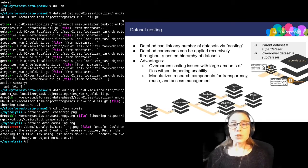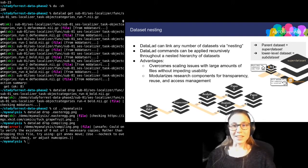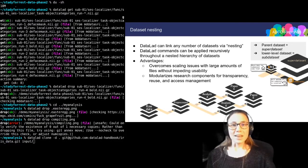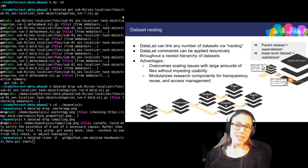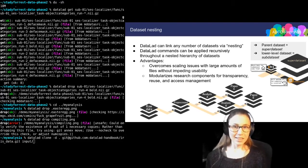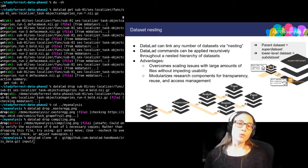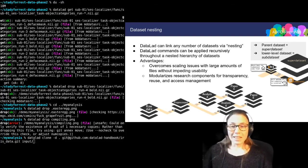Let me show you how to nest a dataset. I will do this in order to prepare my data analysis, by installing a dataset that contains some input data on which I will later run a data analysis. The command that I'm using here is again datalad clone. But this time I'm using an additional flag, -d, which is short for --dataset. And that needs to point to the root of the my-analysis dataset, which will become subsequently the super dataset in this hierarchy.